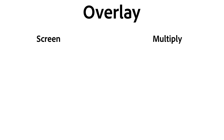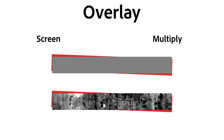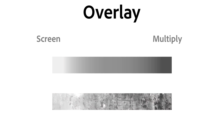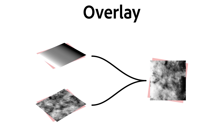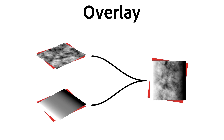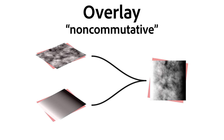Overlay is Add Sub's softer, smoother cousin. It's a combination of Multiply and Screen. Screen will give you smoother, fading, bright areas, where Multiply creates smooth, dark areas. Just like Add Sub, the order of your top and bottom component matters, making Overlay non-commutative.